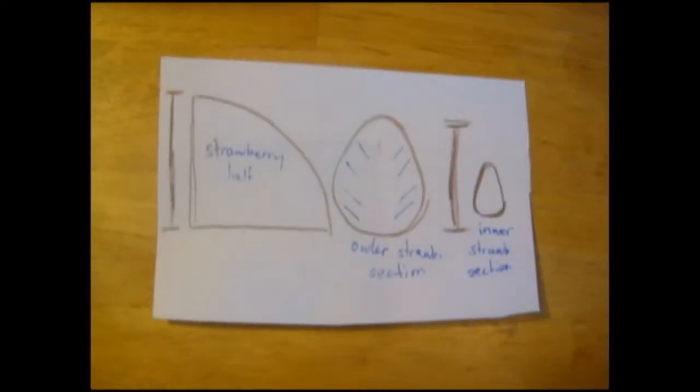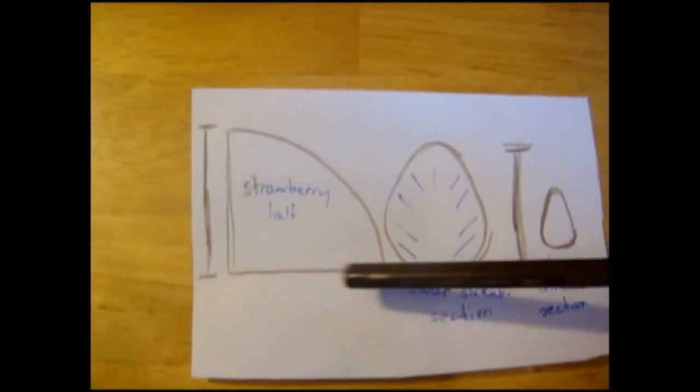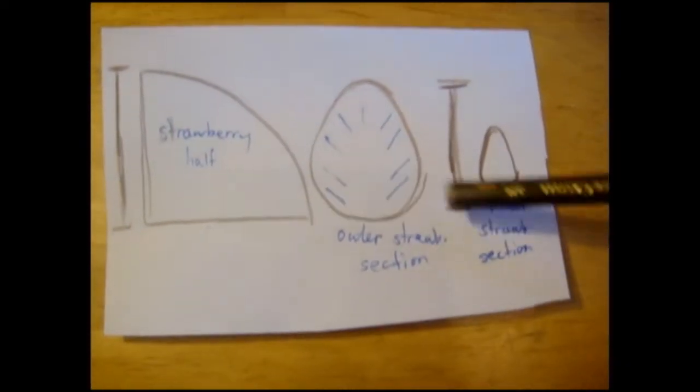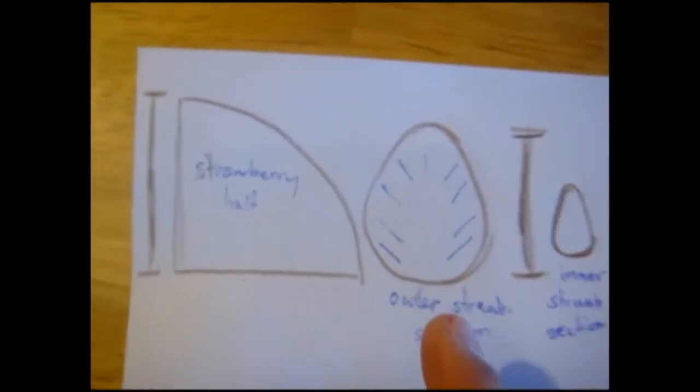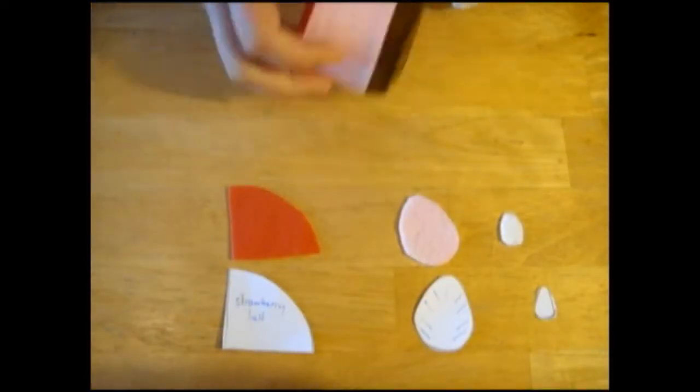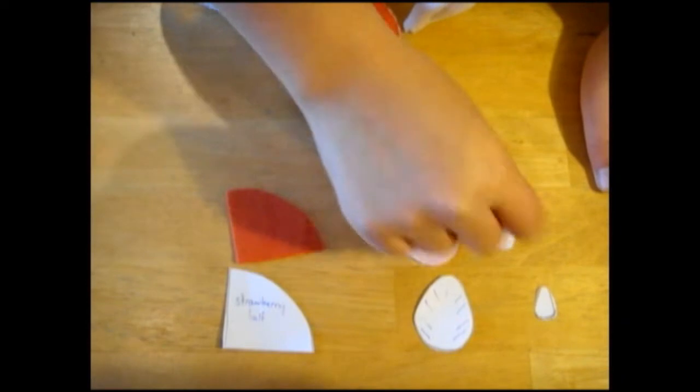Now we're going to make the decoration on top of the strawberry. You'll need the following template pieces. So the height of the strawberry half is equal to the height of the outer strawberry section. You'll need it in the following colors: red, light pink, and white.